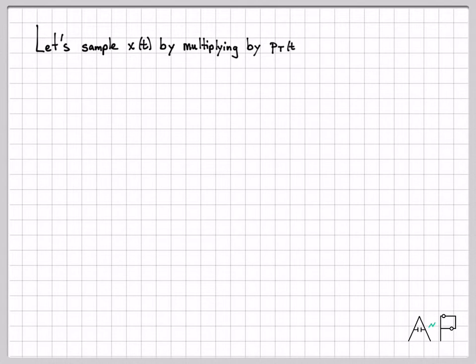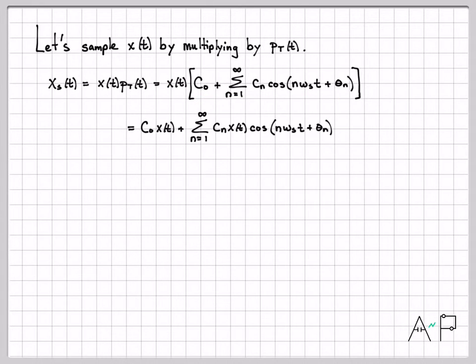So what happens when I sample x(t) by multiplying by this pulse train? I'm going to call the sampled signal x_s(t), which is what I sketched in that little cartoon in the previous chart. We form that by taking my original continuous time signal x(t) and multiplying it by the pulse train. Since the pulse train has a Fourier series representation, I can replace P_T(t) with that Fourier series representation. Then if I distribute x(t) across these interior terms, I have C_0 x(t) plus, and then I brought the x(t) inside each of the terms on this summation.